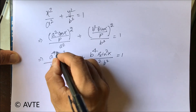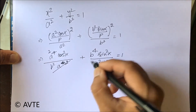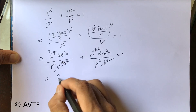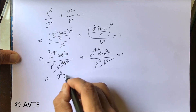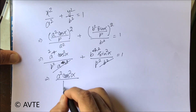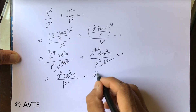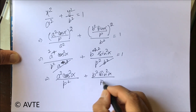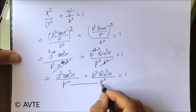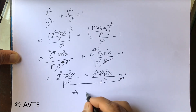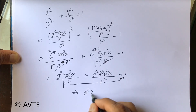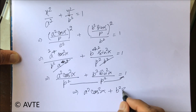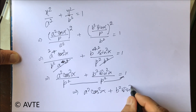Now a square can be cancelled with this, and same way b square cancels with b to the power 4. So we are now left with the simplified expression, and we can cross multiply it as p square and we get the answer. Hence proved that a square cos square alpha plus b square sine squared alpha is equal to p square.